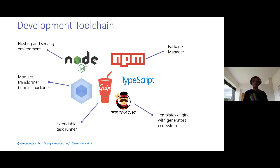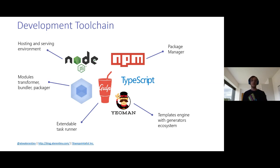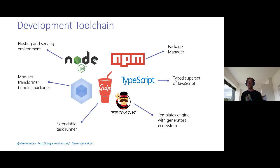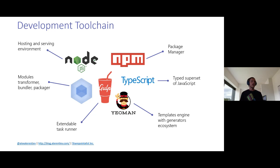Yeoman is a templates engine with a generator system. You can think of a generator as a conditional template — when you launch it, it prompts you with questions and based on your answers creates the needed project template, similar to Visual Studio templates. TypeScript is the language you'll be using for development. It's a typed superset of JavaScript, similar to C#, adding classes, interfaces, and more, making it much easier to implement your solutions.